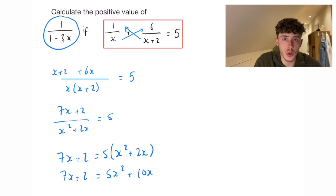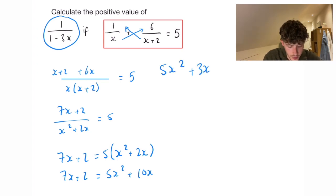So now this looks exactly like a quadratic equation that we need to solve. So if we bring the 7x and the 2 onto the right hand side by taking them away, we're going to have 5x squared plus 3x minus 2 equals 0.